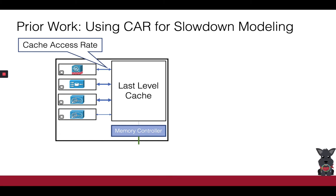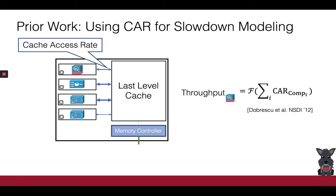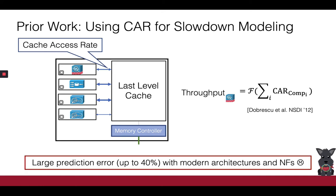SlowMo is not the first framework that looks at performance prediction for NFs. Prior works have demonstrated that slowdown is a result of contention for shared server hardware resources. In NFV, these resources lie in the server's memory subsystem. Dobrescu et al. showed that performance degradation stems from contention in the last-level cache, and modeled the target's throughput drop as a function of the rate at which competitors collectively access this shared cache. Unfortunately, in a modern cluster with line rates reaching 100 Gbps, the prediction error of this method is large, often exceeding 40%.